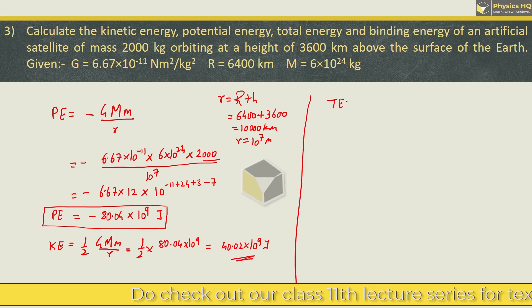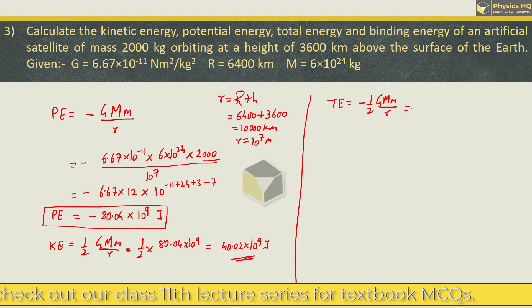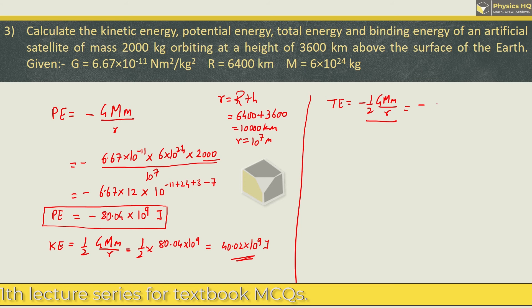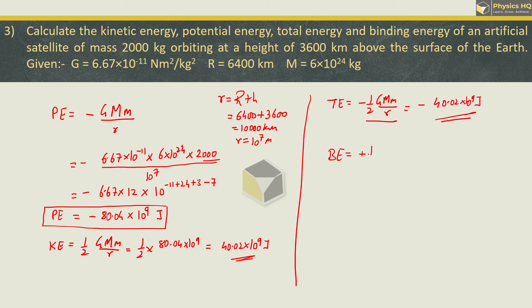Next total energy. Total energy is given by minus 1 by 2 GMm upon R. This equals minus kinetic energy, which we found as 40.02 into 10^9 joule. So total energy is minus 40.02 into 10^9 joule. And lastly, binding energy is opposite of this, meaning plus 1 by 2 GMm upon R. So the final answer is 40.02 into 10^9 joule. Hope you all understood this.